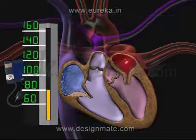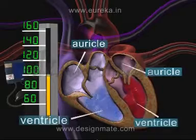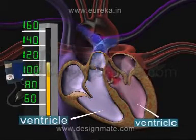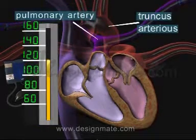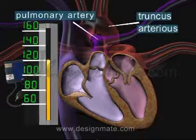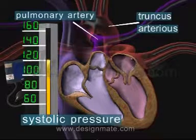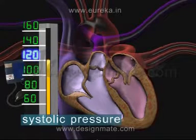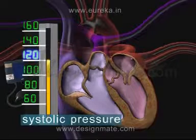When the cardiac muscles contract, blood from the auricle passes to the ventricles. And when the ventricles contract, it passes into the truncus arteriosus and the pulmonary artery. This is the contraction stage and is thus called systolic pressure. The mercury in the column is balanced at 120 mm, so we say that the systolic pressure is 120 mm.